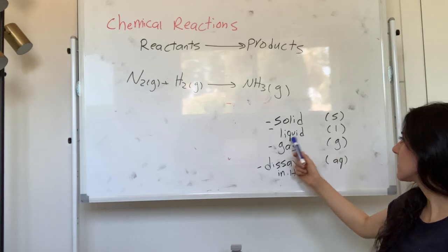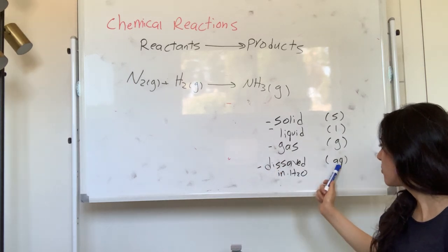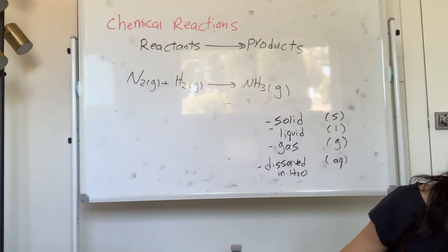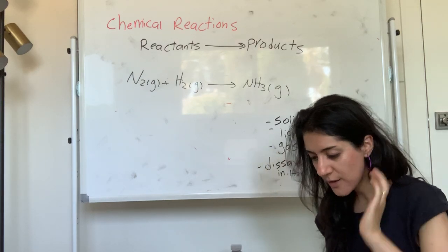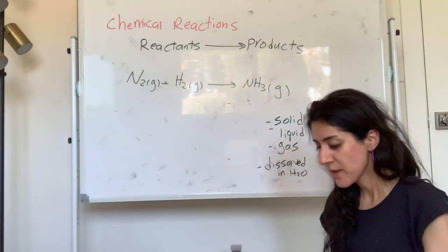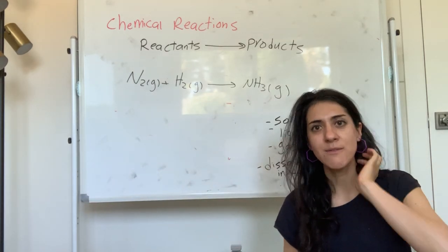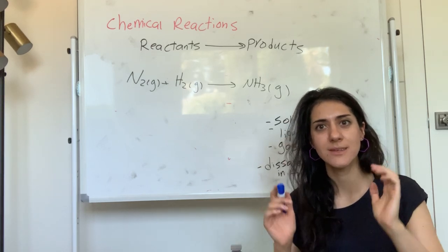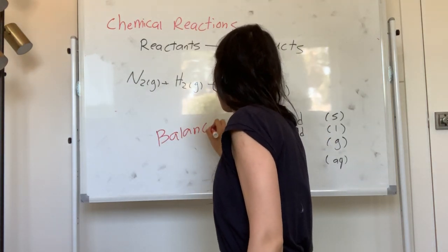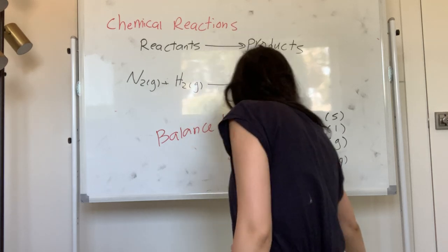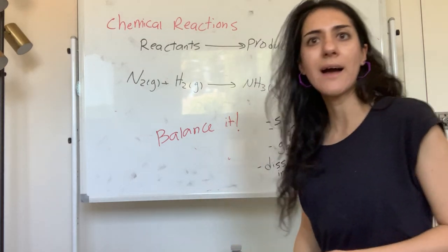If it's solid you put S, liquid L, gas G, and if it's dissolved in water you put AQ for aqueous — we'll go over that later. You have to put the state of each compound. Now, the other thing to always remember: every time I give you a chemical equation, the first thing you need to do is balance it. You need to balance the chemical equation. Don't assume that it's balanced — you have to balance it.